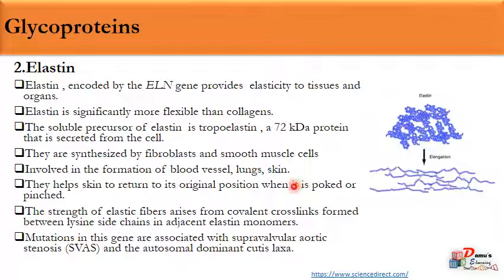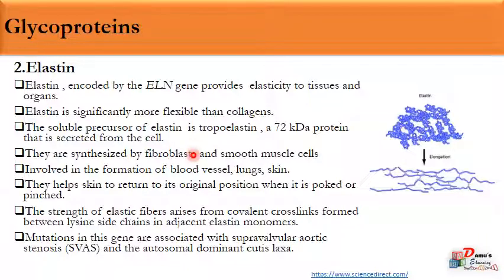Elastin is a glycoprotein encoded by the ELN gene and, as the name suggests, it provides elasticity to tissues and organs, making them more flexible than collagen. It has a soluble precursor called tropoelastin, which is secreted similarly to procollagen. Elastin is synthesized by fibroblasts and smooth muscle cells and is involved in the formation of blood vessels, lungs, and skin — wherever tissues or organs require elasticity to regain their original position after stretching.